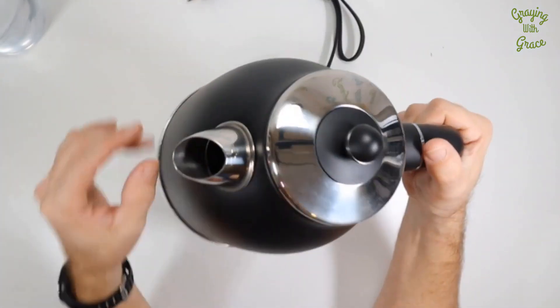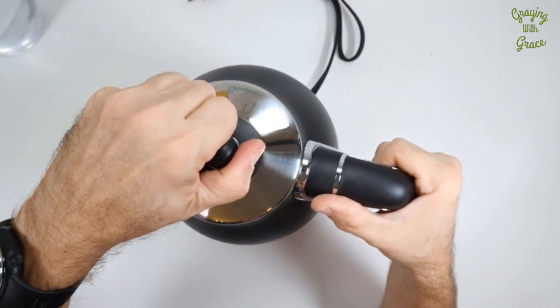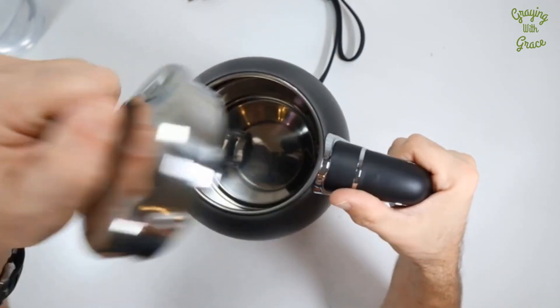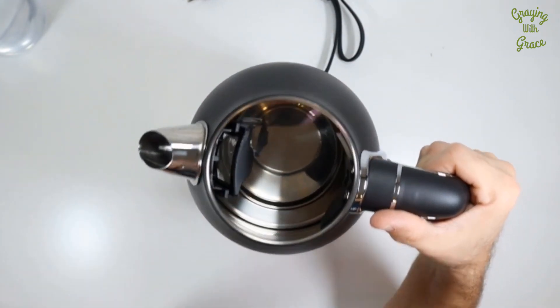This kettle in particular has got a nice large spout opening on it. It's got a nice large snug lid. You just fill it there. It does have a screen on it for filtering the water as you pour it.